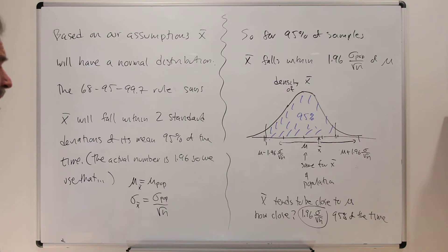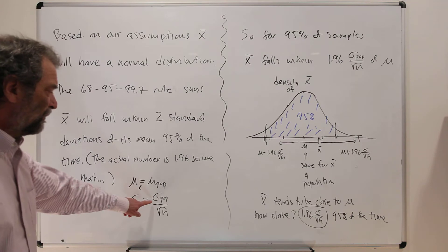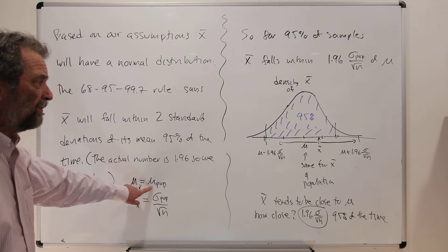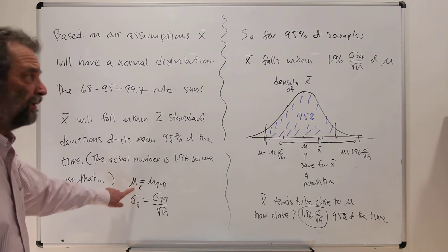So for 95% of samples, we know x-bar falls within 1.96 sigma for the population over root n of mu. I can just say mu because mu for x-bar and mu for the population are the same value.